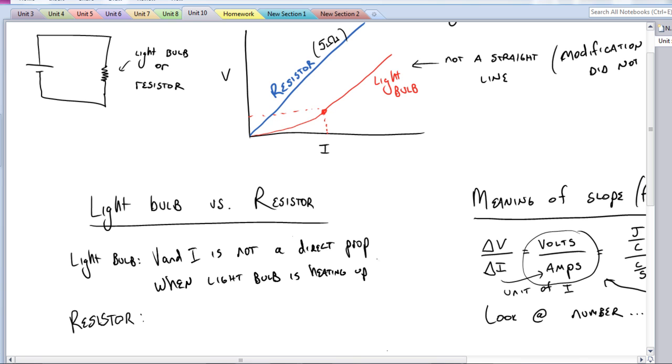So one of the things that we actually say, we call this a non-ohmic resistor. This is non-ohmic, meaning that it is not a direct relationship the whole way through. You really can't use our equations that we're going to develop today because of this little curve.